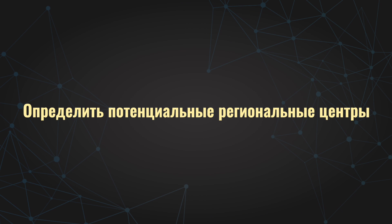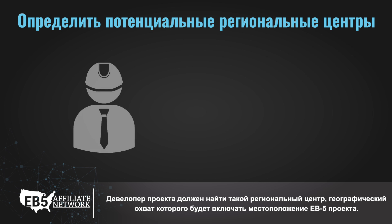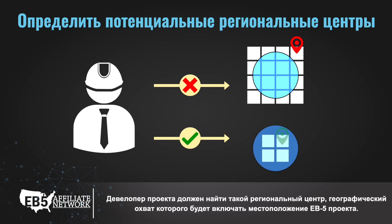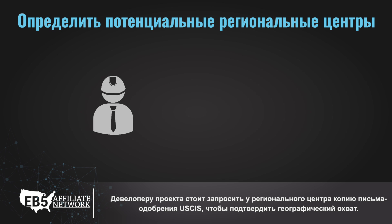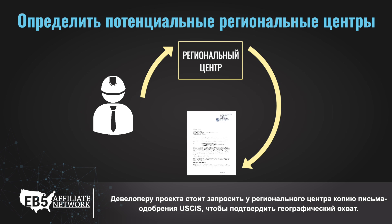Identify potential regional centers. A project developer must find a regional center with a geographic scope that includes the location of the EB-5 project. A project developer should ask a regional center for a copy of its USCIS approval letter to confirm its geographic scope.